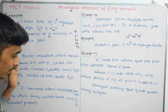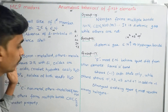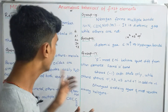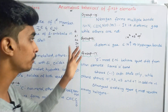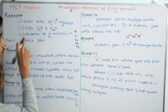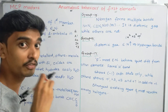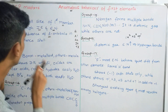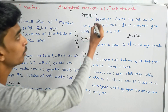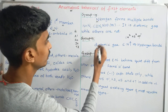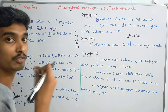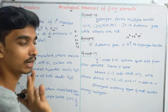Next, in P-Block Groups 13, 14, 15, 16, 17, and 18, the first element shows anomalous behavior. In Group 13 the first element is Boron, Group 14 is Carbon, Group 15 is Nitrogen, Group 16 is Oxygen, Group 17 is Fluorine. These first elements all behave a little differently in various aspects.